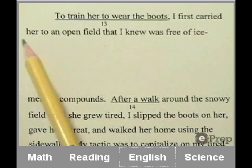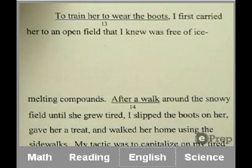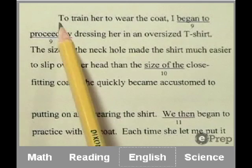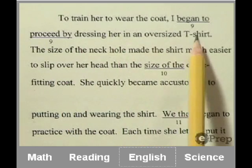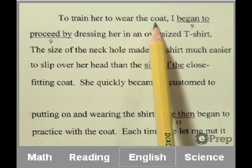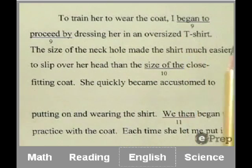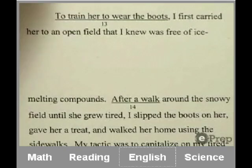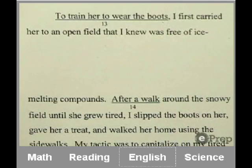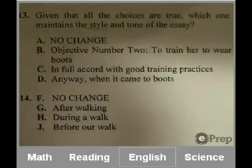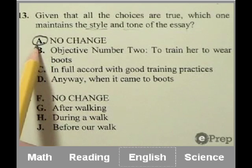To train her to wear boots, I first carried her to an open field. Let's take a look at the paragraph before. The paragraph before starts, to train her to wear the coat, I began by dressing her in an oversized t-shirt. So to train her to wear the coat, and then this one begins, to train her to wear the boots. I think that sounds pretty good. It's consistent with the style and tone of the essay. So I would quickly pick no change and move on in the interest of time on a real test. But we're not in a rush right now, so let's take a look at the others.